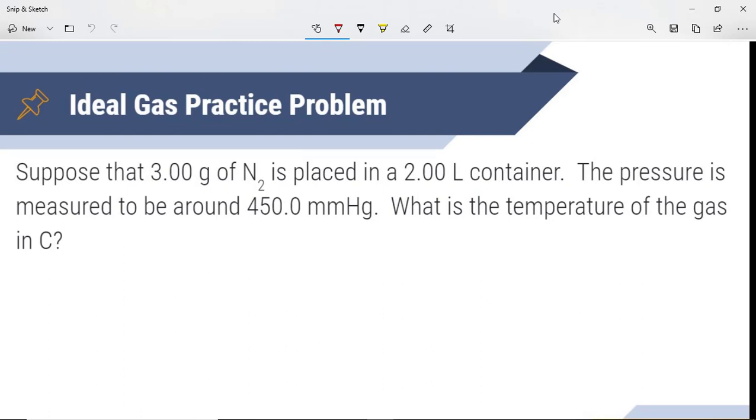Let's suppose that 3.00 grams of nitrogen is placed in a 2.00 liter container. The pressure is measured to be around 450 millimeters of mercury. What is the temperature of the gas in degrees Celsius? So a couple things going on here. First off, we need to identify if we are going to use the combined gas law or the ideal gas law. Now, in this instance, because nothing is changing, we are going to be using the ideal gas law, which we remember is PV equals nRT.